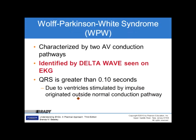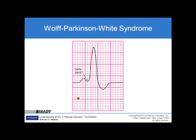Wolff-Parkinson-White Syndrome, or WPW, is characterized by two AV conduction pathways and is identified by a delta wave seen on the EKG. The QRS is greater than 0.10 seconds due to the ventricles being stimulated by an impulse originating outside the normal conduction pathway. The identifying feature is a very short PR interval with a slurred, diagonal upstroke — the P wave, before it even ends, pops up into the actual QRS complex, forming a delta wave. This is how we identify Wolff-Parkinson-White Syndrome. This concludes Chapter 8 on atrial dysrhythmias.